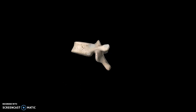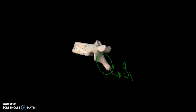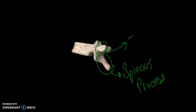Moving down a bit, you can see this tail-like structure coming out — this is the spinous process. There is one spinous process in total per vertebra.